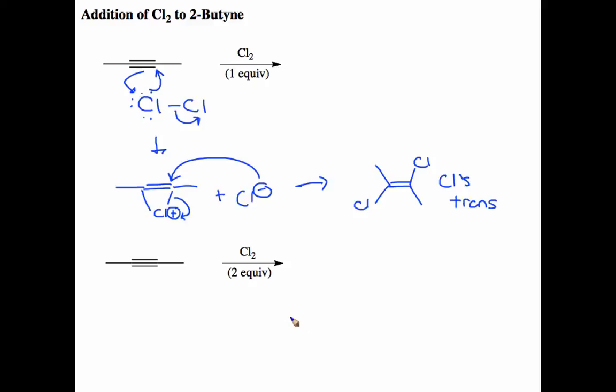So that gives us this alkene with the chlorines trans. Okay, but now we have a second equivalent of chlorine to add. So we're essentially just adding Cl₂ across this alkene to get an alkane, and we're adding two more chlorines, one on each side.